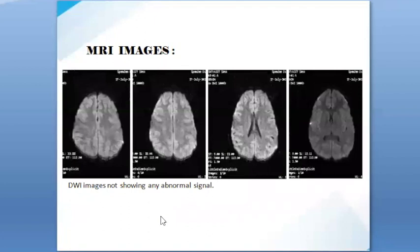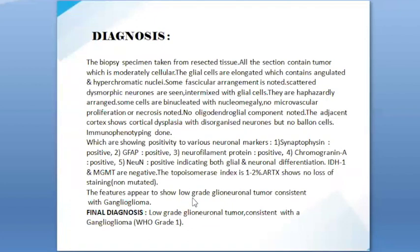The DWI images do not show any abnormal signal. Diagnosis: The biopsy specimen taken from the resected tissue shows tumor that is moderately cellular. The glial cells are elongated with angulated and hyperchromatic nuclei. Some fascicular arrangement is noted and scattered dysmorphic neurons are seen intermixed with glial cells, haphazardly arranged. Some cells are binucleated with nucleomegaly. No microvascular proliferation or necrosis noted. No oligodendroglial component noted. The adjacent cortex shows cortical dysplasia with disorganized neurons but no balloon cells.